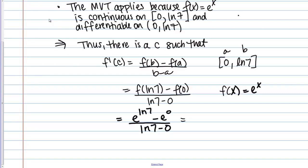If I simplify that, what's E to the natural log of 7? Well E and natural log are inverse functions so that's just 7. E to the 0 is 1, anything to the 0 power is 1. Then I get natural log of 7 in the bottom so this becomes 6 over natural log of 7.